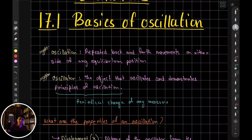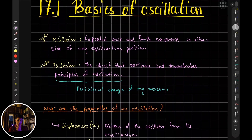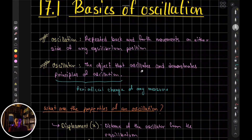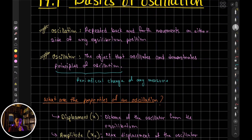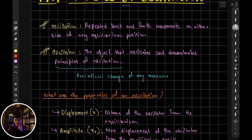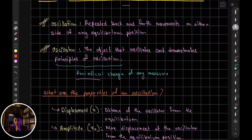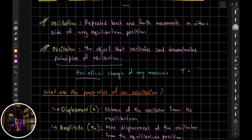Next, we have the oscillator. An oscillator is simply the object that is oscillating — any object moving back and forth that demonstrates the principle of oscillation. The principle of oscillation refers to the periodic change of any measure.